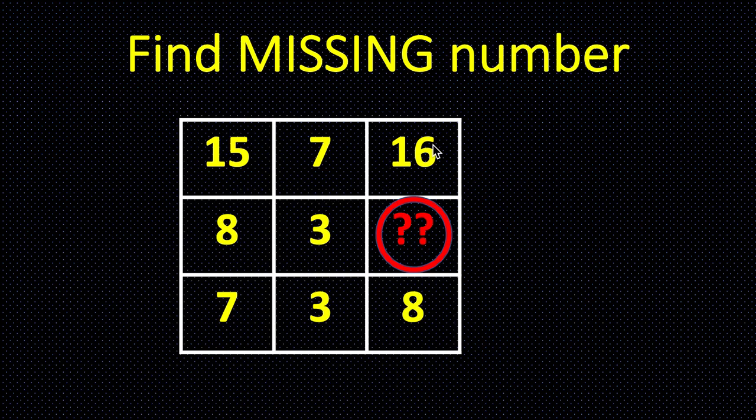Now let's solve this problem. We have to find the pattern here. What number should come here? You can try with different rows. You see that 15, 7, 16, then 8, 3, and the bottom row 7, 3, 8.